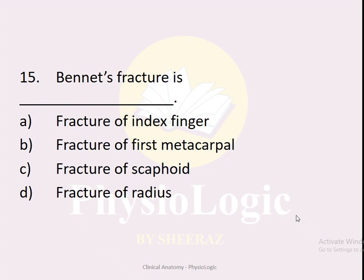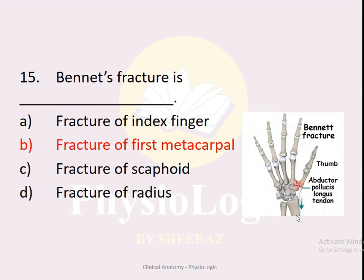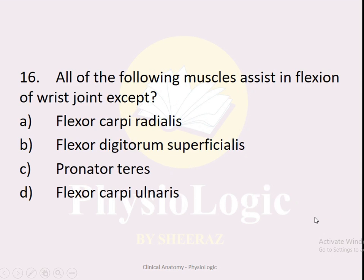MCQ number fifteen: Bennett's fracture is — A — fracture of index finger, B — fracture of first metacarpal, C — fracture of scaphoid, D — fracture of radius. The correct option is B — fracture of the first metacarpal. MCQ number sixteen: All of the following muscles assist in flexion of the wrist joint EXCEPT: flexor carpi radialis, flexor digitorum superficialis, pronator teres, flexor carpi ulnaris. The correct option is C — pronator teres, which assists in pronation of the forearm, not wrist flexion.